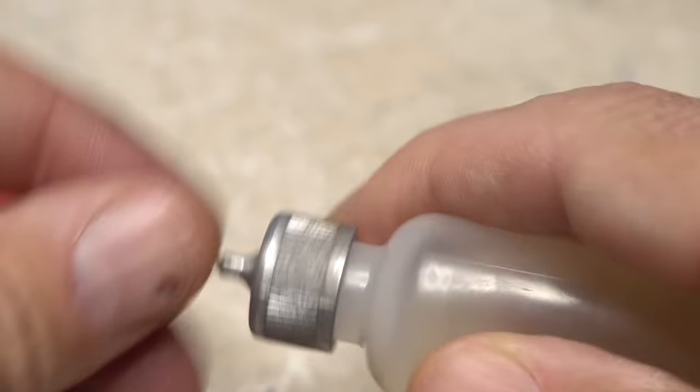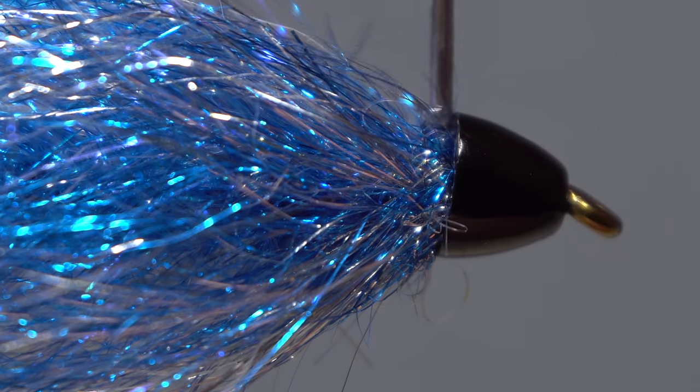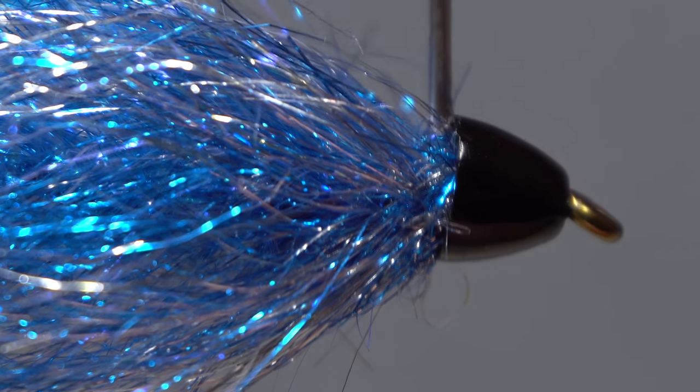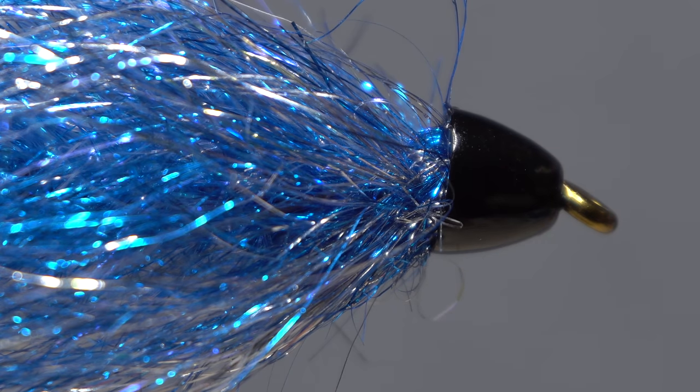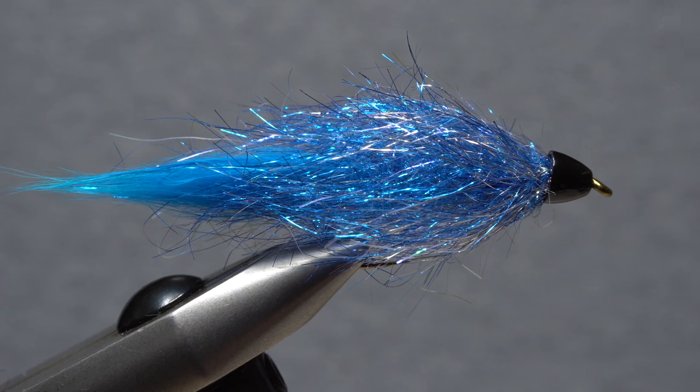A drop of head cement, here Sally Hansen Hard as Nails, applied to the thread wraps beneath the cone will ensure they don't come unraveled. And that's the frozen fox.